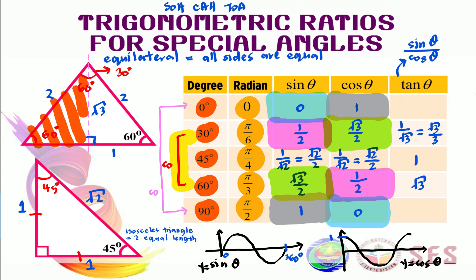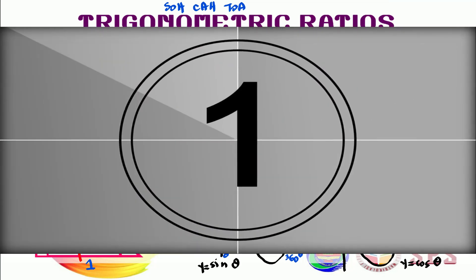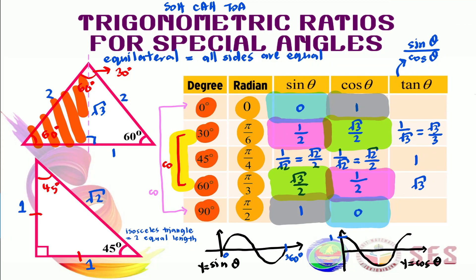Now let's find tan 0 and tan 90. Tan 0 equals sine 0 over cos 0, which is 0 divided by 1, so tan 0 equals 0. Tan 90 equals sine 90 over cos 90, which is 1 over 0. If you put this in your calculator it will give you a maths error — but do not write your answer as maths error. The correct answer is undefined.